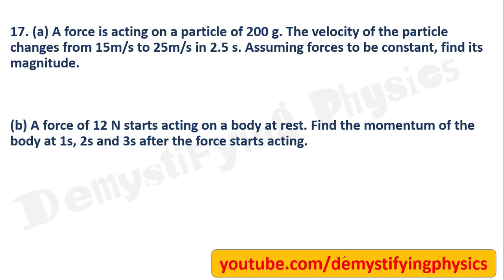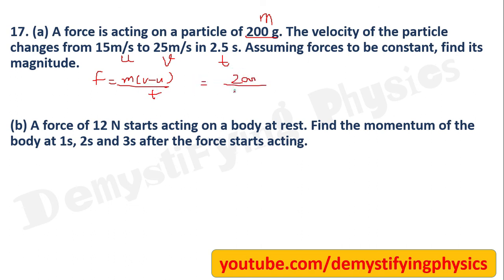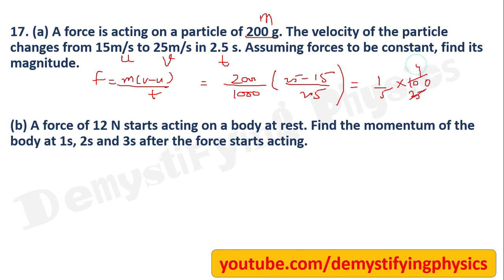A constant force acts on a particle. Given u, v, and time, find the magnitude of force using F = m(v - u)/t. Convert mass from grams to kg first by dividing by 1000. Substituting: m/1000 × (25 - 15) / 22.5. The answer is approximately 4/5 Newton.